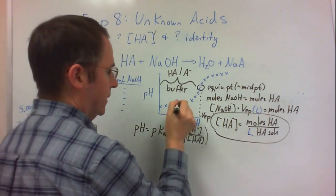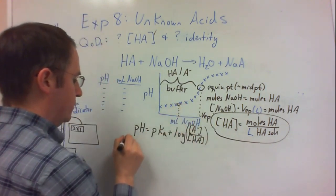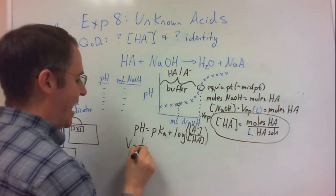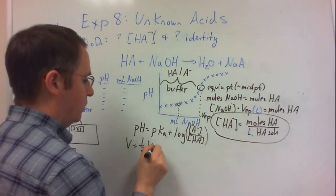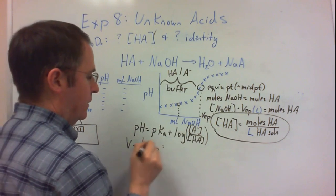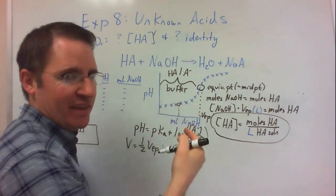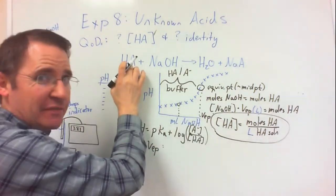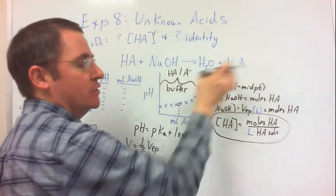So at a particular point in this region, specifically for this halfway point, in other words, when the volume is one half the equivalence point volume, I've started titration but I'm halfway there. So as a result, I've converted half of my original acid into its conjugate base.